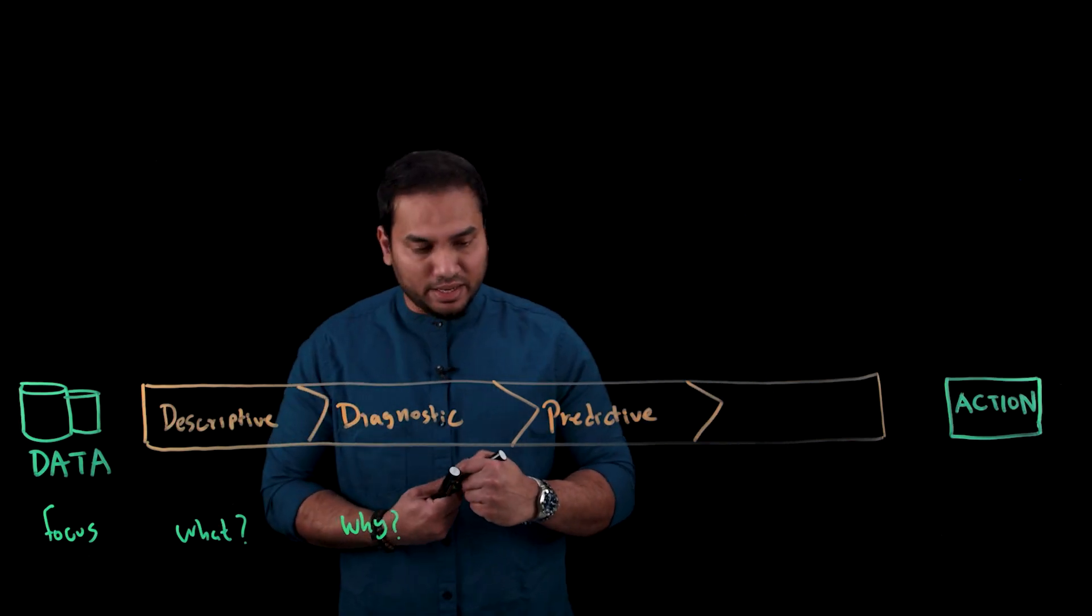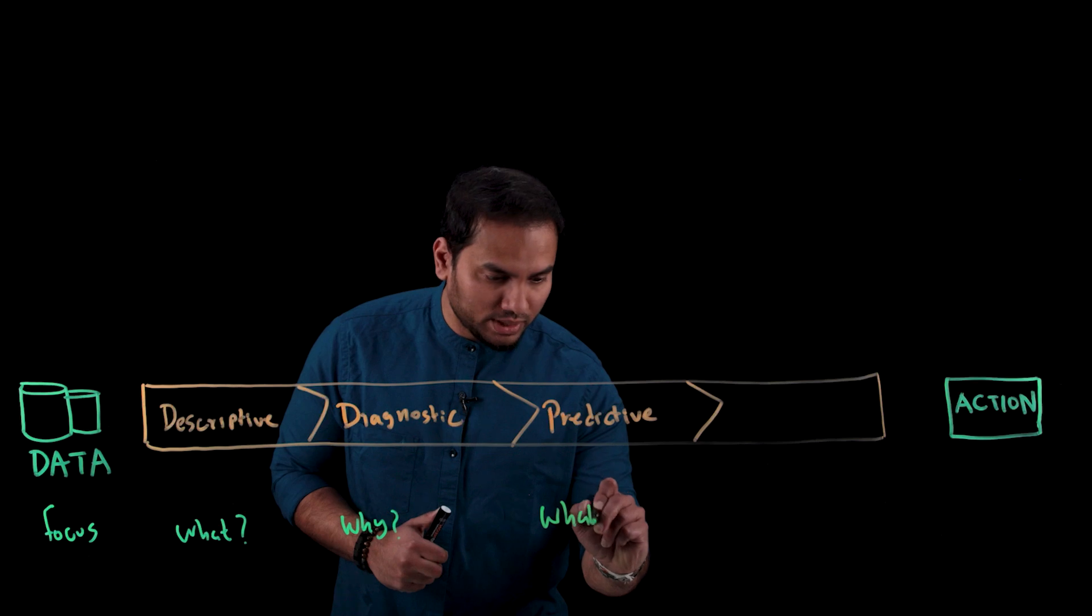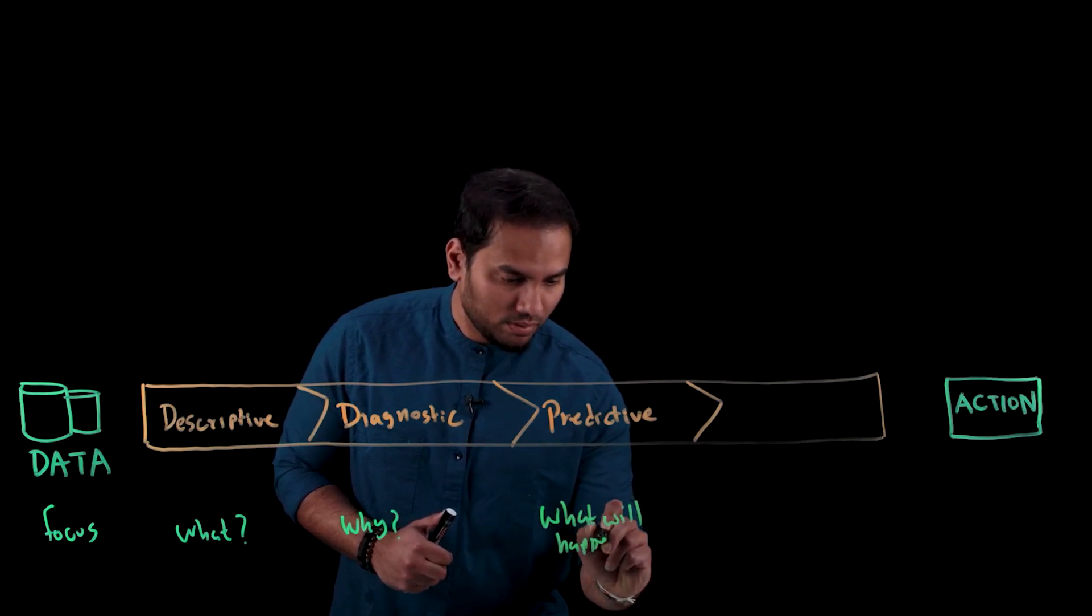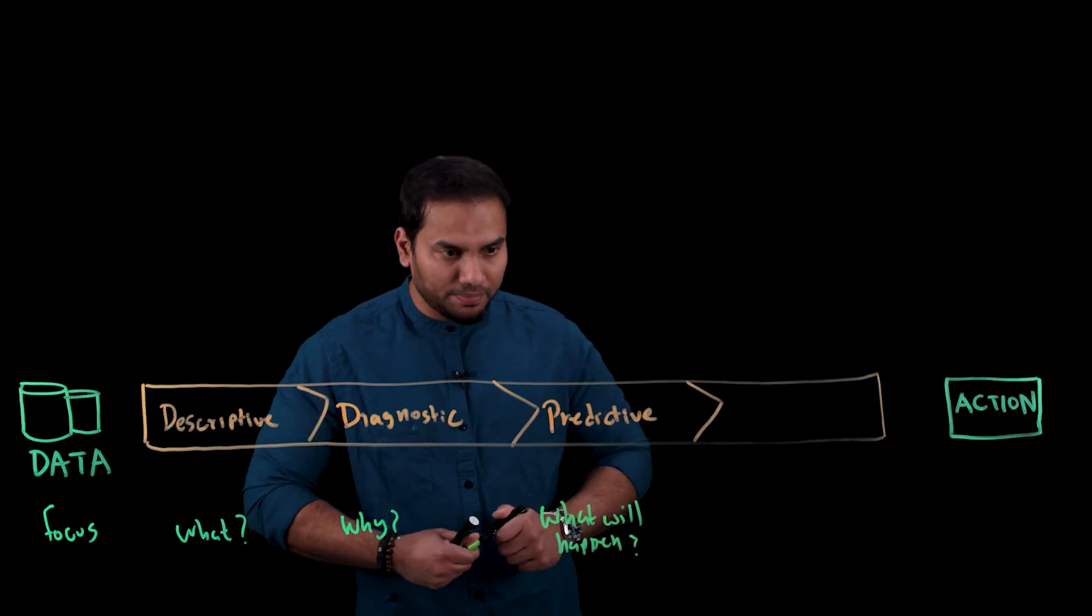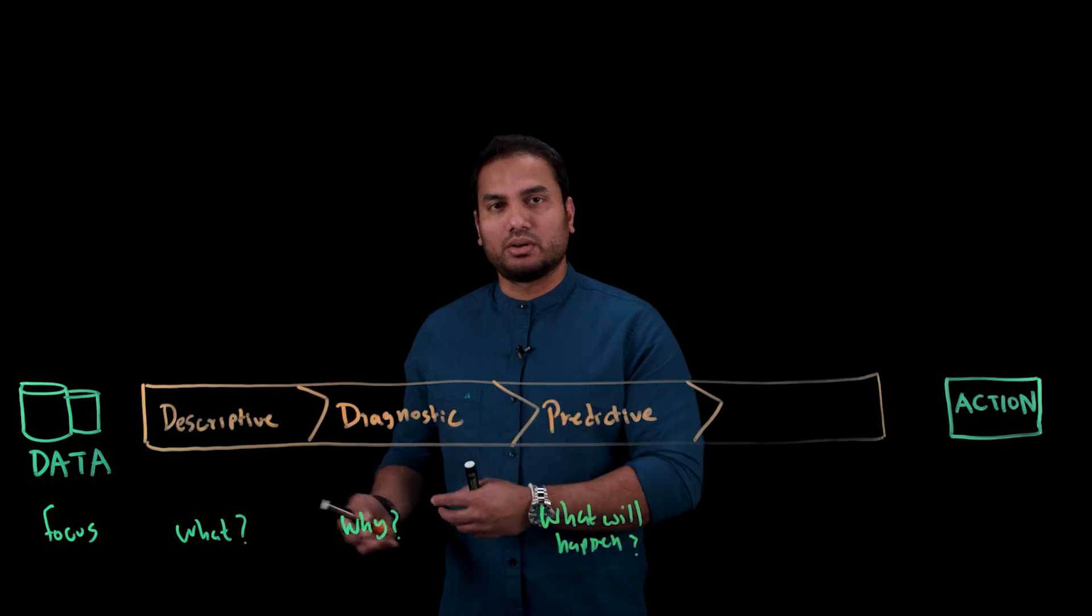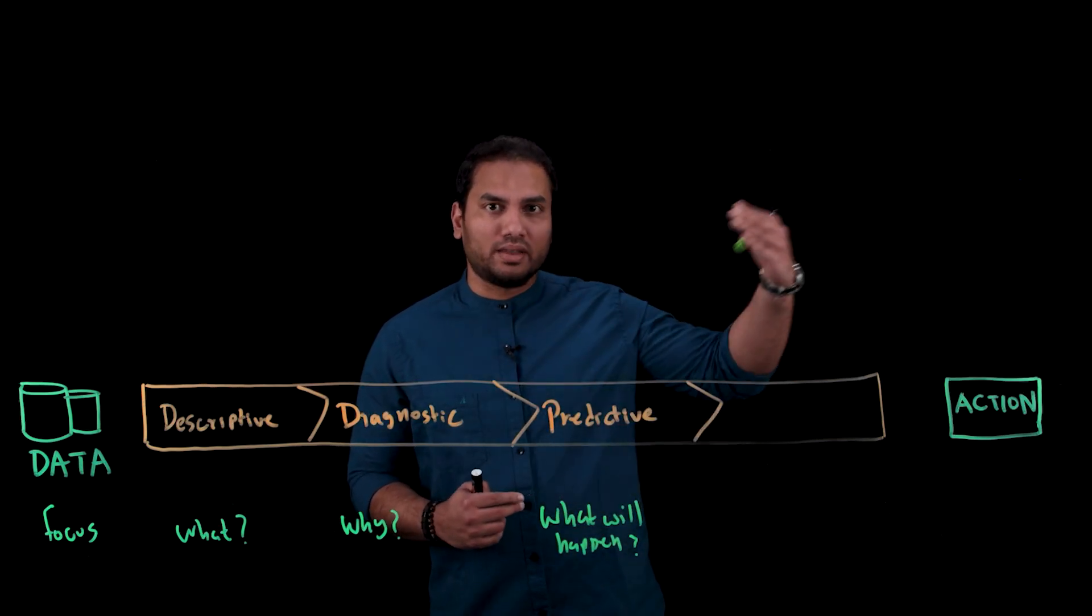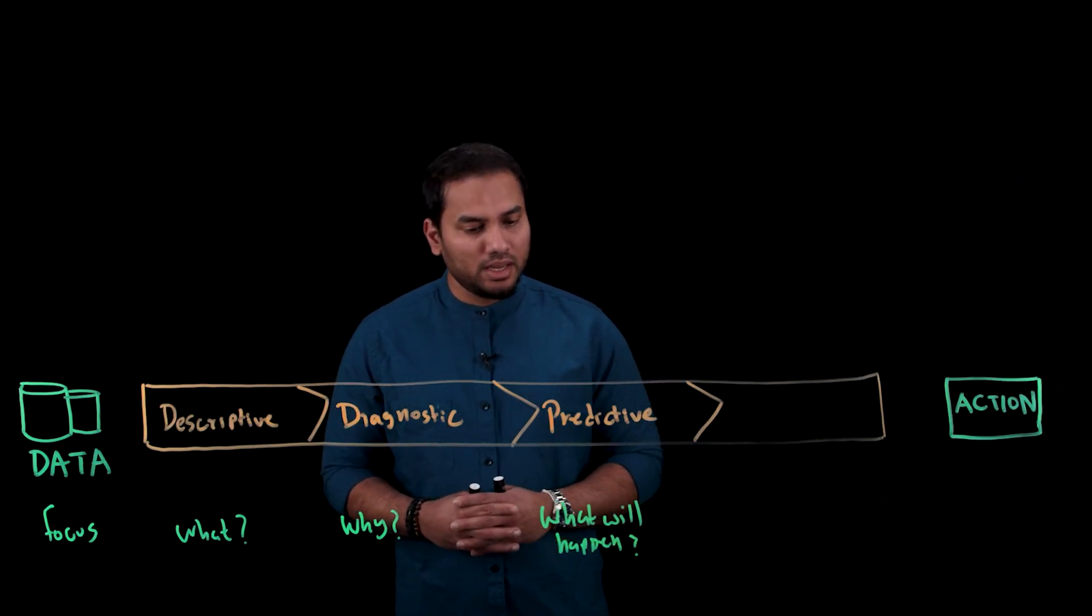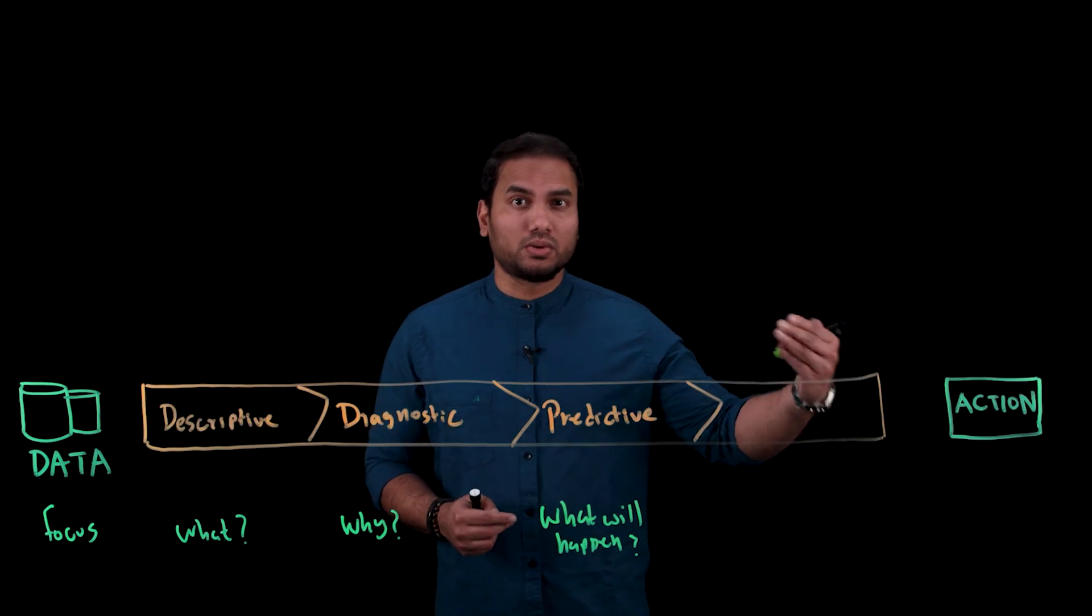And the focus here again is on understanding what will happen in the future with your data. So at this point, you would bring in AI and machine learning algorithms, look at your historical data, trends, seasonality patterns, and so on, and predict where the data would be at some point in the future. So essentially, it's a forecast. And an example again here would be, what would my churn be next quarter?